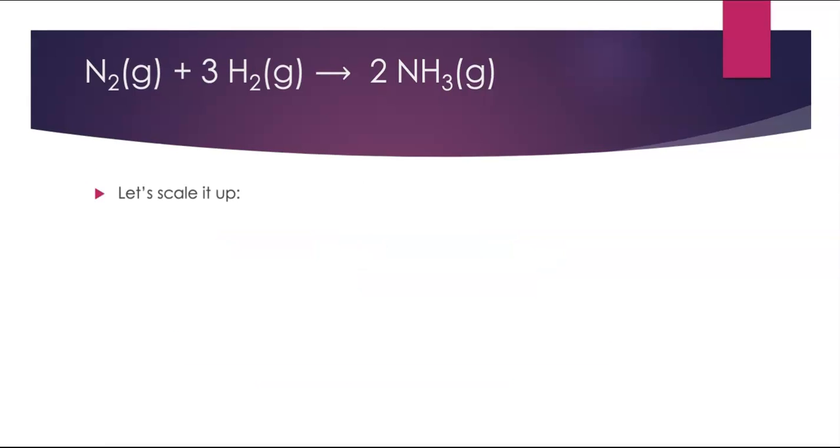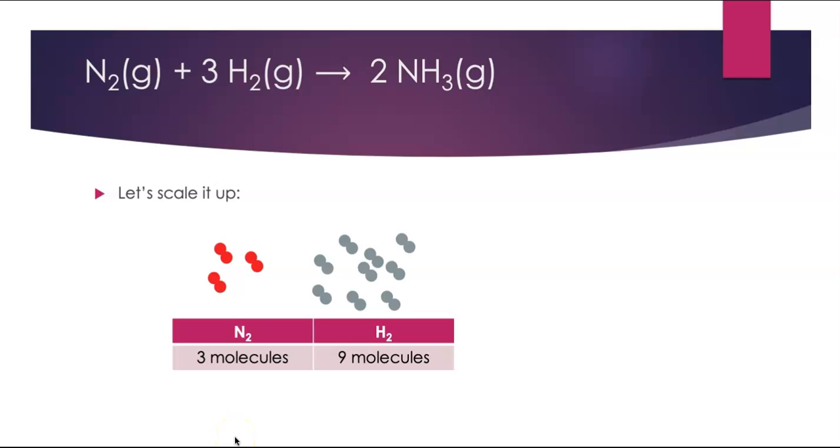We could scale this reaction up. We're not going to have just one nitrogen molecule reacting. What if we had three molecules of nitrogen reacting? The ratios from the balanced equation tell us that I would then need nine hydrogen molecules to react, and I'd end up making six ammonia molecules.